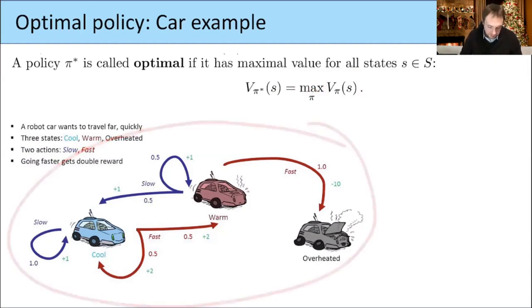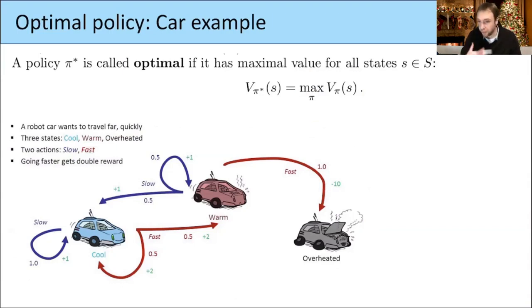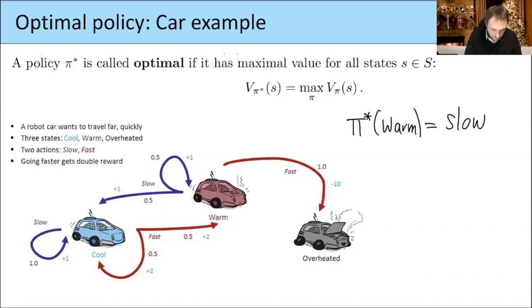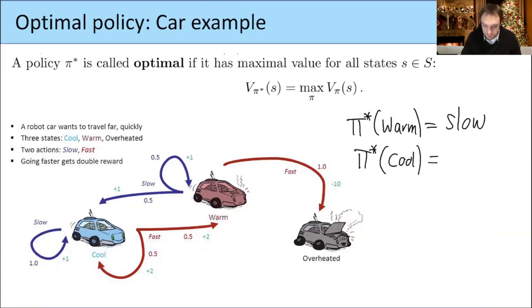In the car example, it is quite clear what the optimal policy is. We always want to go fast, but if we are 'warm', we don't want to go fast because with 100% probability we get a reward of minus 10. So clearly, the optimal policy for 'warm' should always be 'slow'. But if we are in the 'cool' state and want to maximize our value, we always want to go fast because we get a reward of 2 instead of 1. Therefore the optimal policy maps the state 'cool' to the action 'fast'.